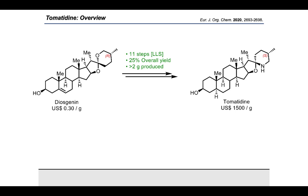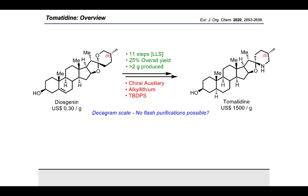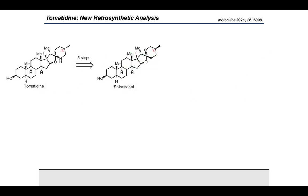However, we identified multiple shortcomings in the first synthesis that would make large-scale synthesis inefficient: the reliance on a chiral auxiliary to set the F-ring stereocenter, the generation of a temperature-sensitive primary alkyl lithium reagent, and the heavy TBDPS protecting group. We also set the ambitious objective of avoiding flash chromatography completely, aiming to develop only clean transformations with intermediates obtained by recrystallization, distillation, or silica pads only.